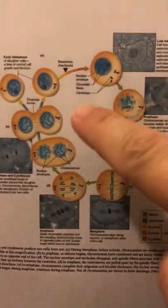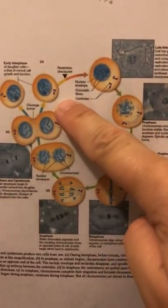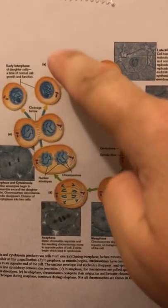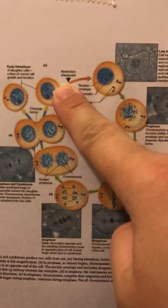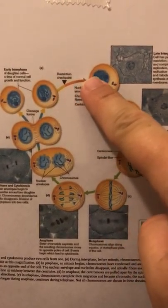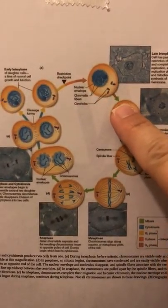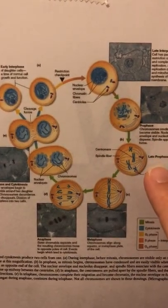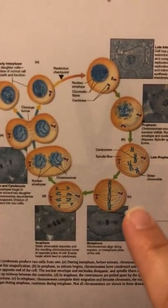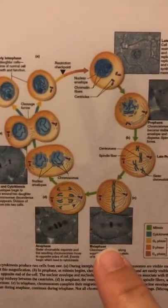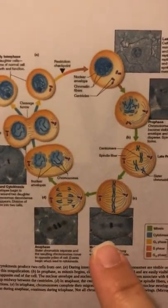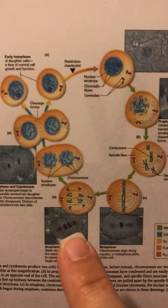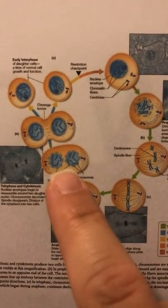This is the complete cell cycle. It begins with interphase and then goes through the mitosis stages of prophase, metaphase, anaphase, and telophase, and then cytokinesis.